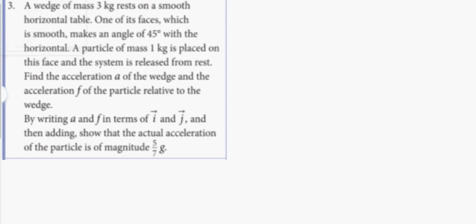We're on the next question. A wedge of mass 3 kilograms rests on a smooth horizontal table. One of its faces, which is smooth, makes an angle of 45 degrees with the horizontal. A particle of mass 1 kilogram is placed on this face and released from rest. We need to find the acceleration A of the wedge and the acceleration F of the particle relative to the wedge, expressing A and F in terms of i and j, and then show that the actual acceleration of the particle has a magnitude of 5g over 7.